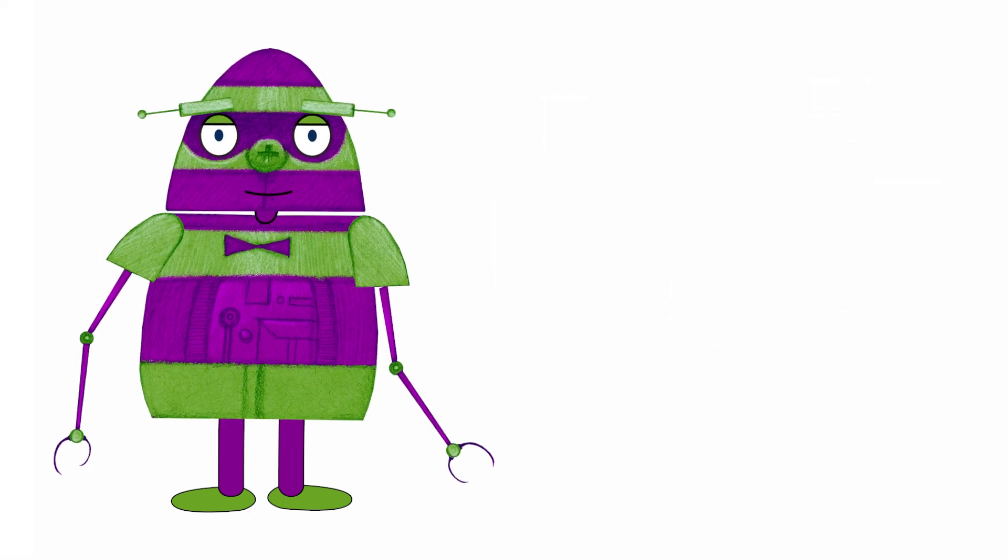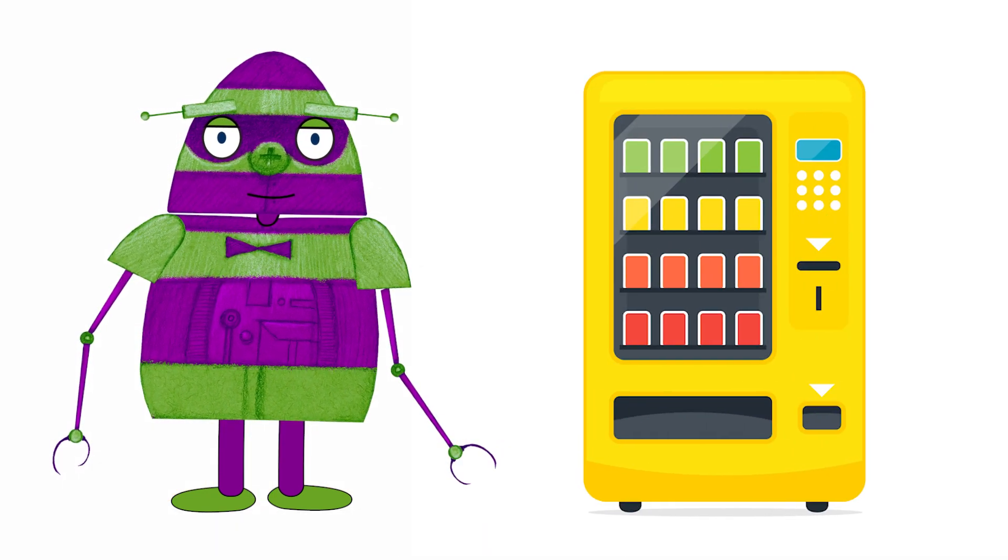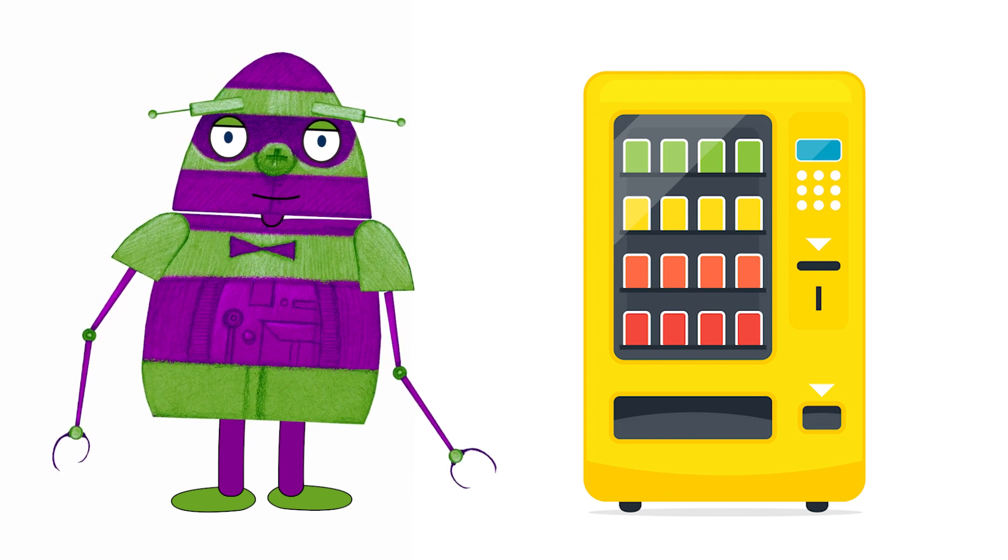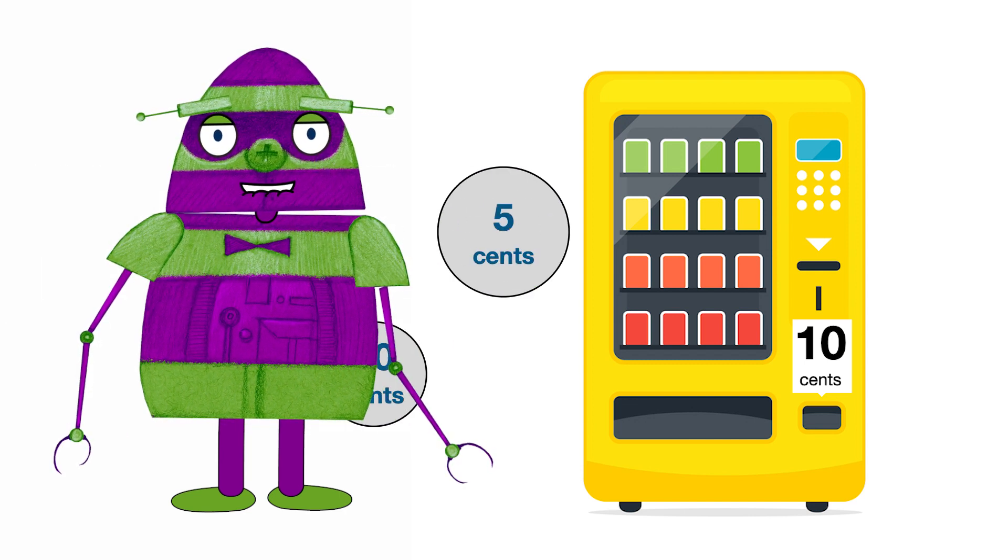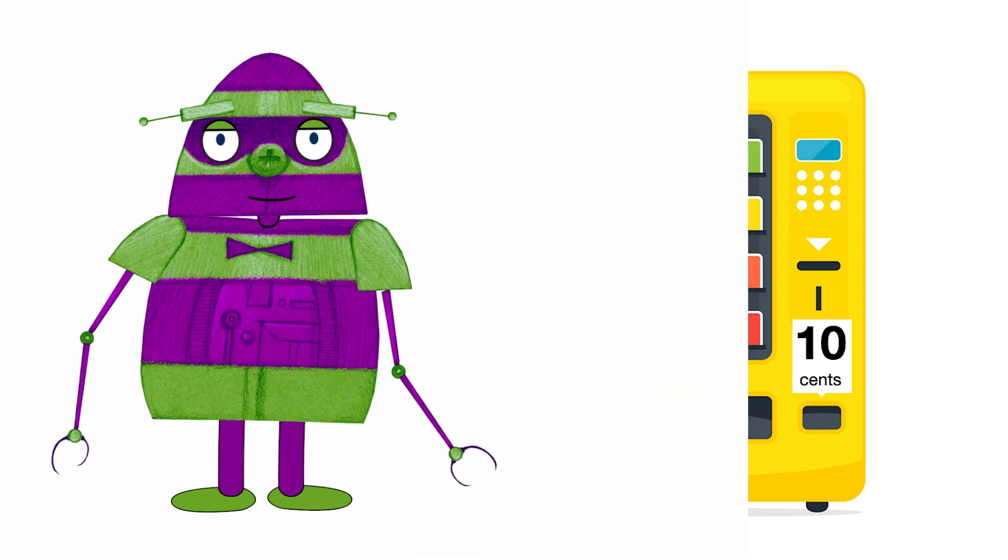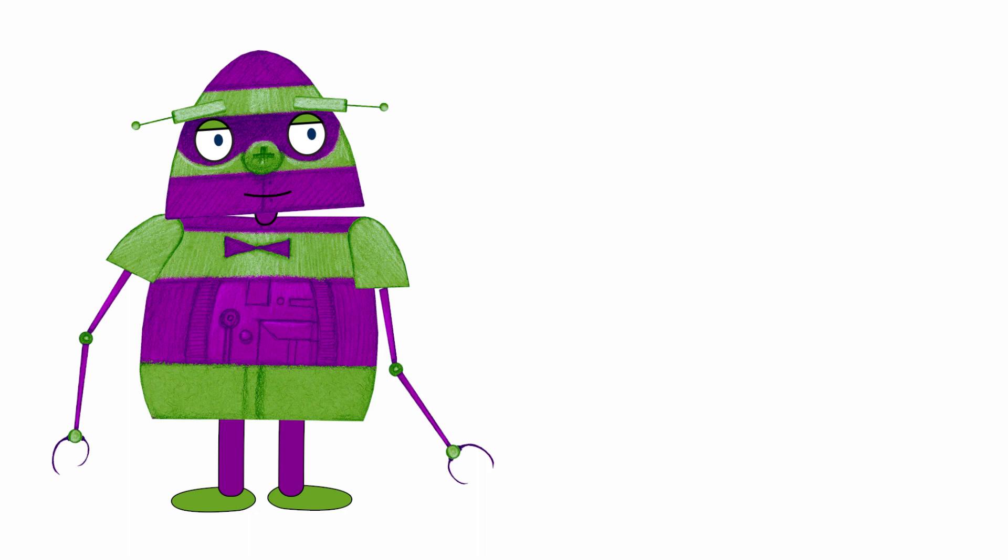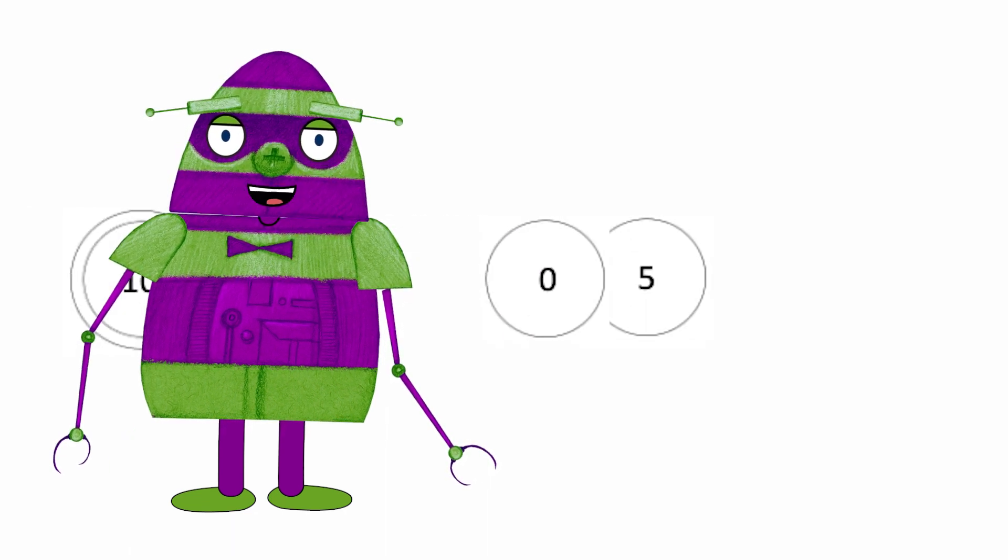Another example would be a vending machine. Let's consider the good old days, when you could buy a snack for 10 cents. The valid inputs would be 5 cents or 10 cents. The possible states would be 0, 5, and 10 cents.